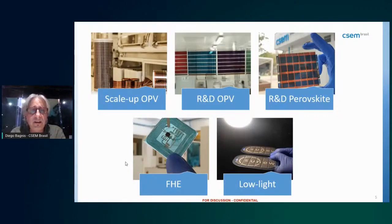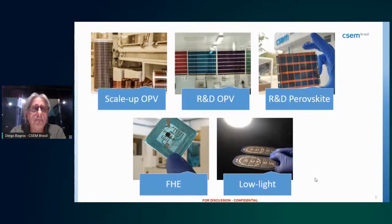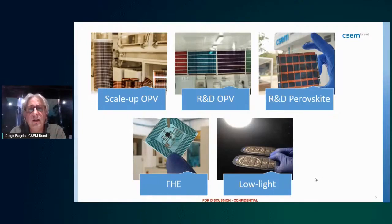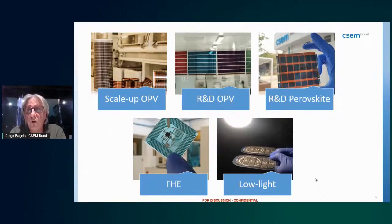For the scale-up of OPV we support all R&D development and help our spin-off SunNew translate R&D into the production line. There is research and development on OPV, new challenges and topics to be explained, and also work on perovskite — a new kind of hybrid material that is one of the most promising technologies of recent years, especially for energy production.